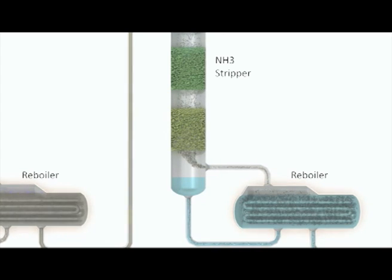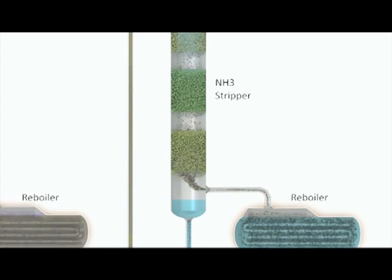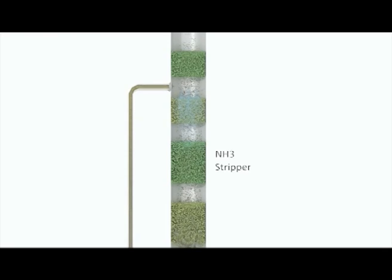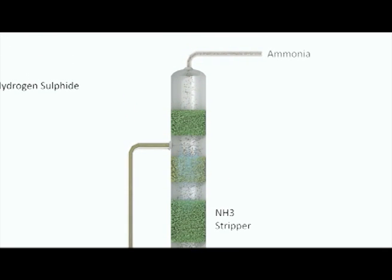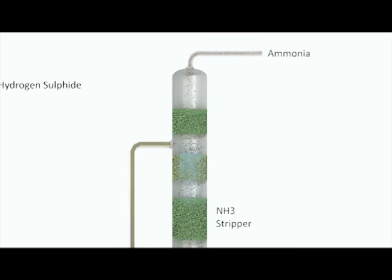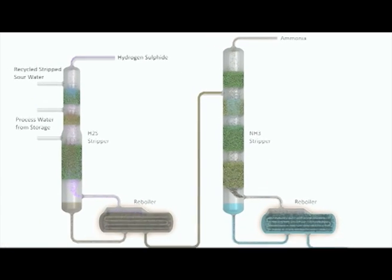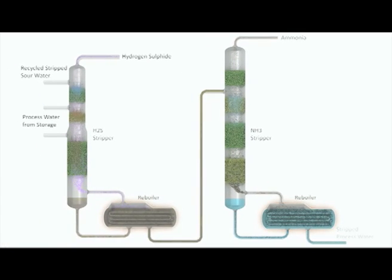By a similar mechanism, ammonia and remaining traces of hydrogen sulfide are removed from the solution and rise to the top of the column where they are removed. The resultant stripped process water is sent to a storage tank.